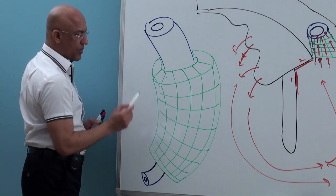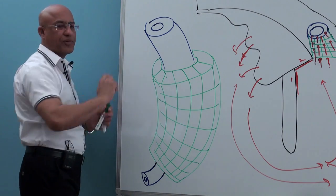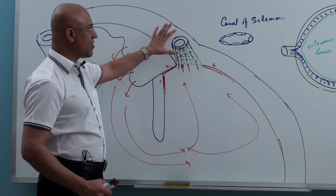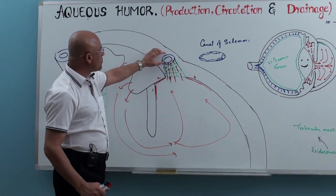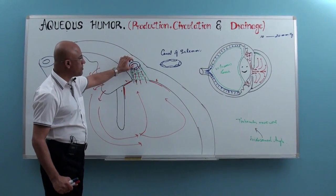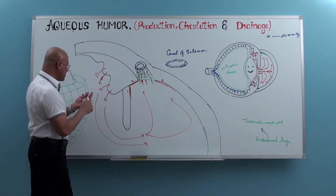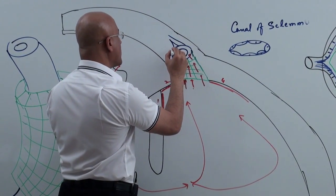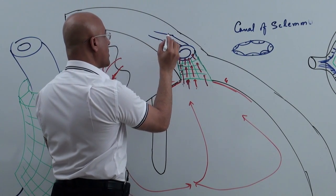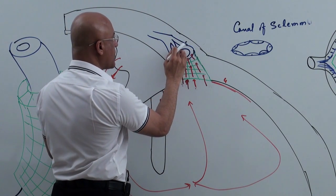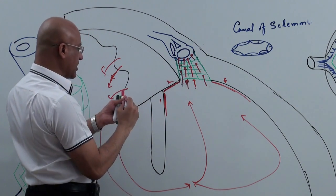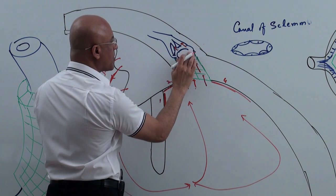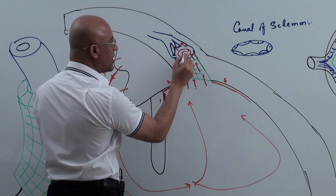In the diagram: here is the angle, cornea is on one side, iris is on the other side. Here is iris, then part of the ciliary body, then sclera — in which there is the canal of Schlemm — and then the trabecular meshwork, and then cornea. This is the trabecular meshwork through which fluid has to pass to reach the canal of Schlemm.